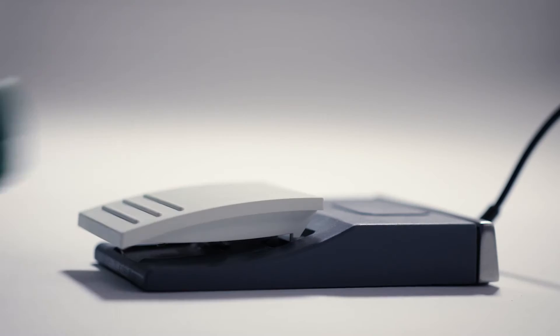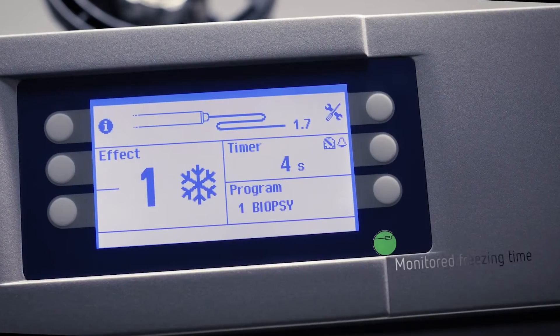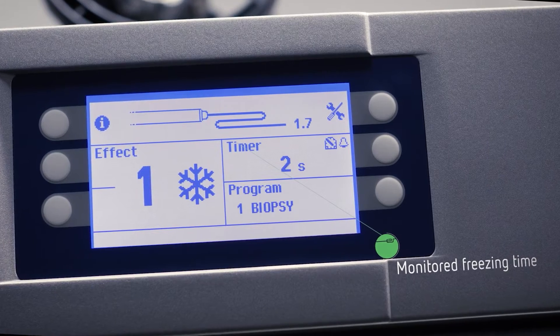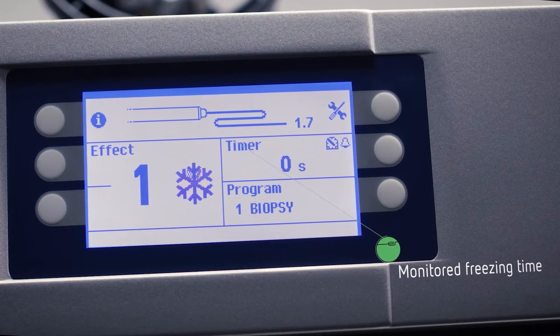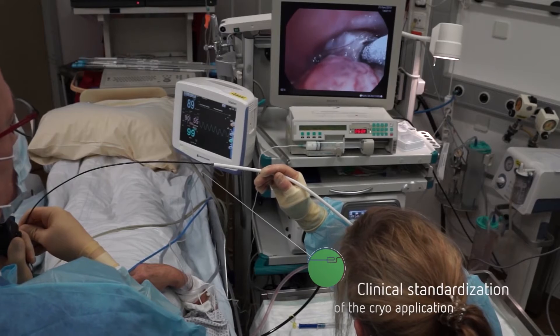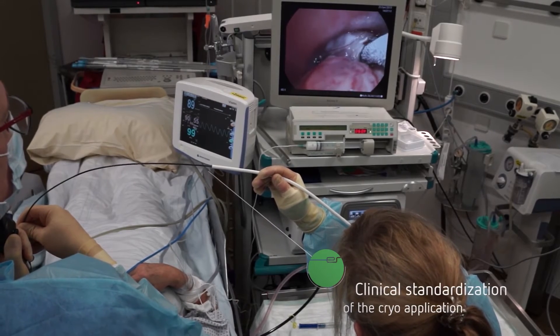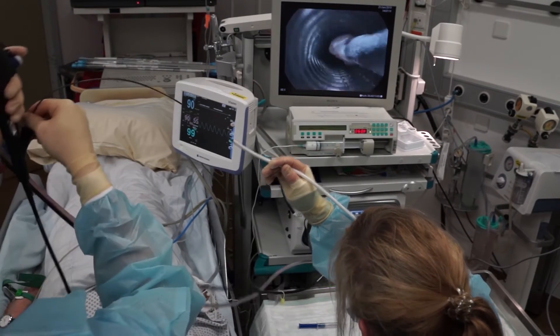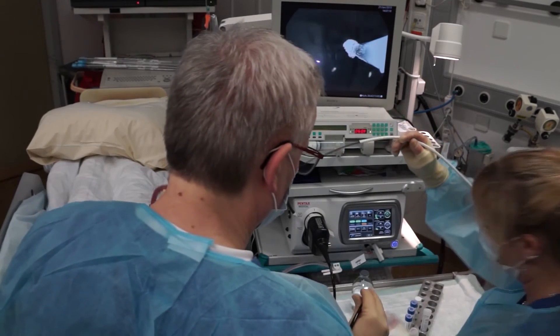In addition, freezing time is another important factor for the desired tissue effect. It can be controlled visually and acoustically via the timer. The Herba Cryo 2 cryosurgical system enables reproducible freezing results and thus supports standardization of the clinical application.